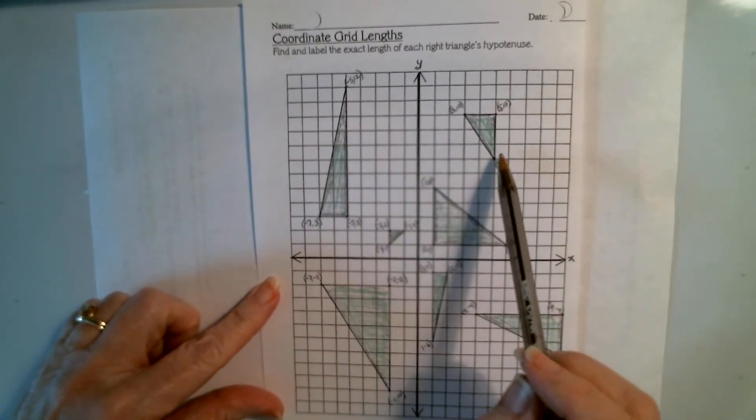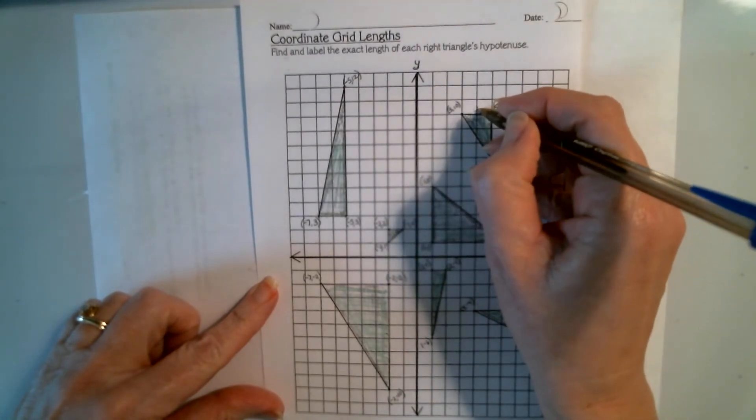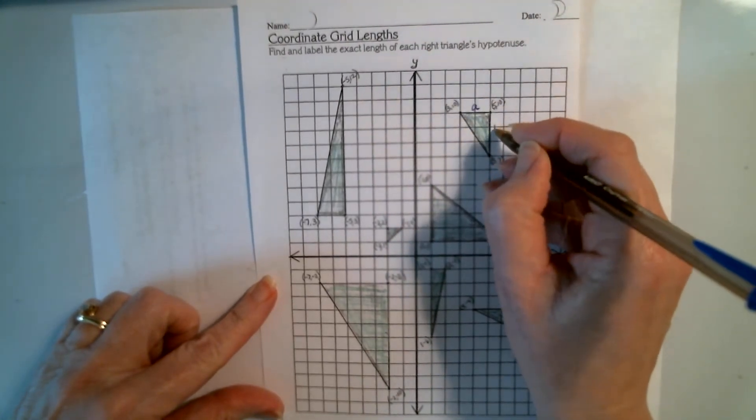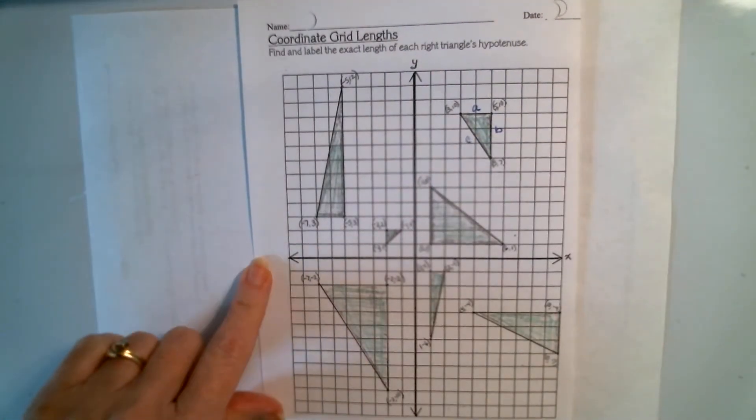Now, we start here. I'm going to just label that this is A and this is B because they make the right angle here, and so this is our hypotenuse.